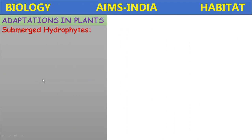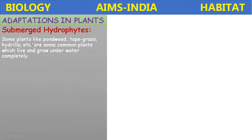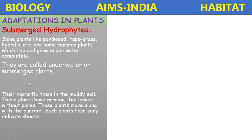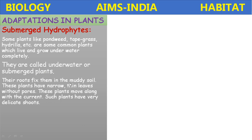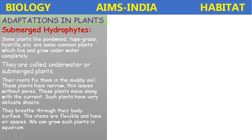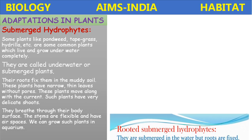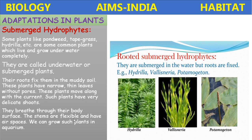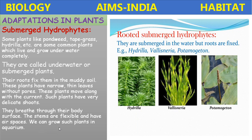Submerged hydrophytes are underwater plants. Plants like pondweed, tapegrass, and hydrilla live and grow completely underwater. They are called submerged plants. Their roots fix them in the muddy soil. These plants have narrow, thin leaves without pores and move along with the current of water. They have very delicate shoots.